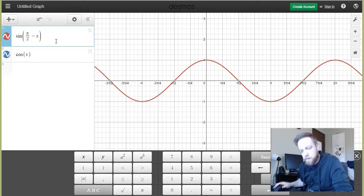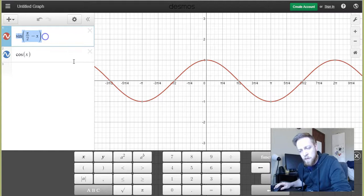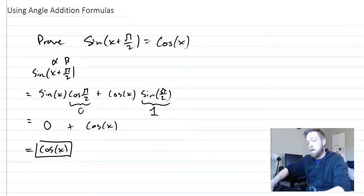These are called co-functions. And a lot of people will just give these to students right away. But I think it makes more sense when you think about them with angle addition. Because if you're ever stuck and you don't remember them, you could just use the angle addition formula. Okay. So we have to do another example here.